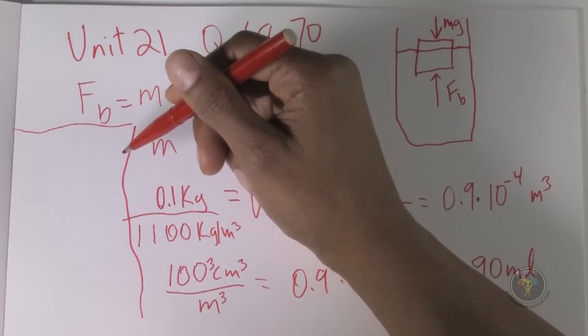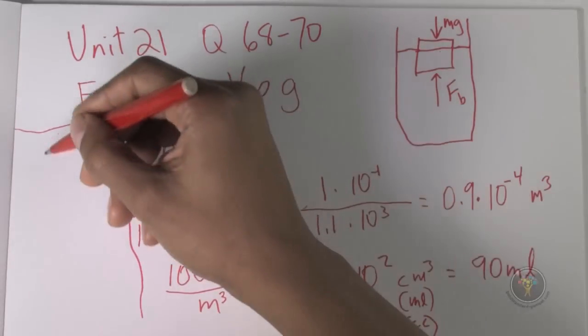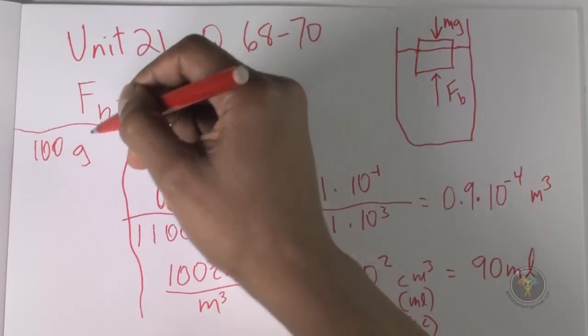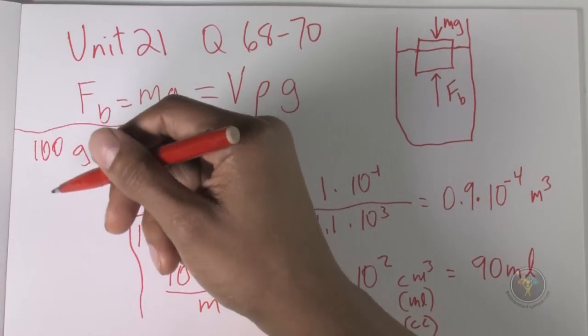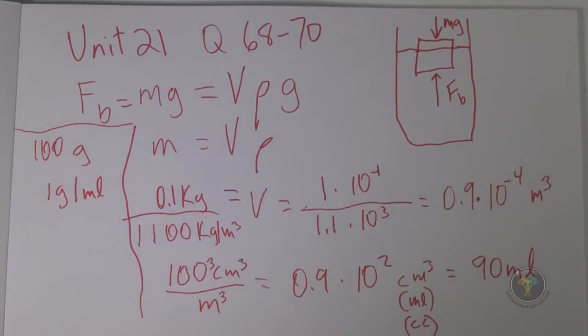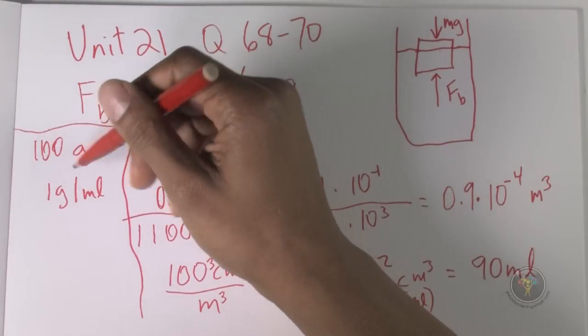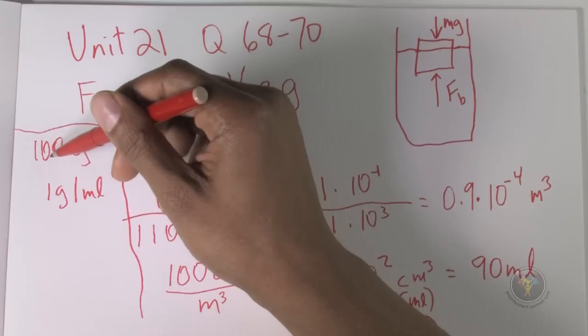The density of liquid water, because it just melted, is 1,000 kilograms per meter cubed. 1,000 kilograms per meter cubed is the same thing as 1 gram per milliliter. If you really dig deep, you probably did memorize at some point that the density of water is 1 gram per centimeter cubed, or 1 gram per milliliter.